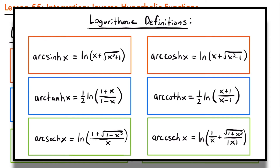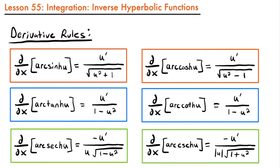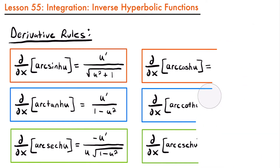From our previous lesson we looked at the logarithmic definitions for these inverse hyperbolic functions, and the same pairs of functions have very similar logarithmic definitions. The structure for inverse hyperbolic sine is the natural log of x plus the square root of x squared plus 1, compared to inverse hyperbolic cosine which uses x squared minus 1. Because of these pairs, when we consider the integration rules we only need three — one for each pair of functions — and each rule combines a pair into one integration rule.